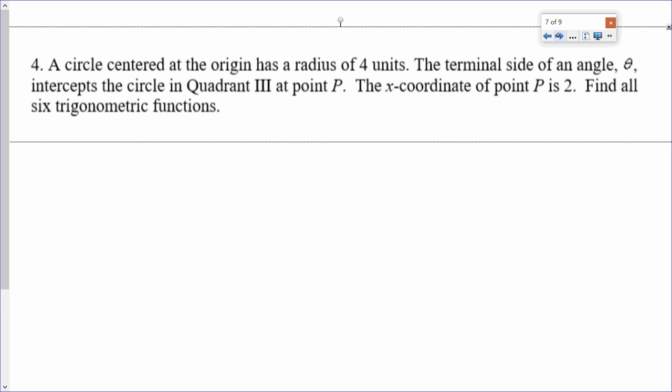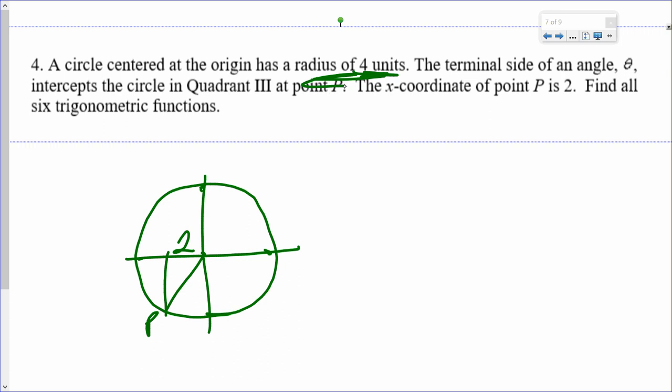A circle centered at the origin has a radius of 4. So the center's at the origin. The radius is 4. The terminal side of an angle theta intercepts in quadrant 3 at point P. The x-coordinate is 2, which makes this 2, find the 6 trig functions. Well, we talked about the radius is the hypotenuse of the triangle. Since a radius is always a distance from the point on the circle to the center, the radius will always be the hypotenuse. Is this a triple?